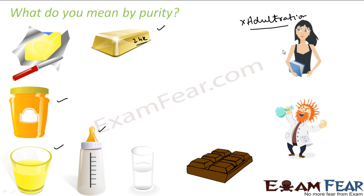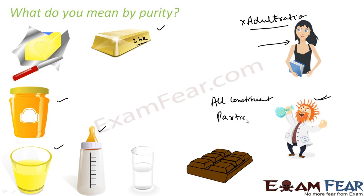That is from the perspective of a common man. But for scientists, the perception is totally different. For scientists, something is pure means all the particles are the same — all constituent particles have to be the same. If that is the case, then scientists consider that particular thing as a pure substance.